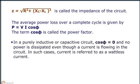In a purely inductive or capacitive circuit, cos φ equals zero, and no power is dissipated even though a current is flowing in the circuit. In such cases, current is referred to as a wattless current.